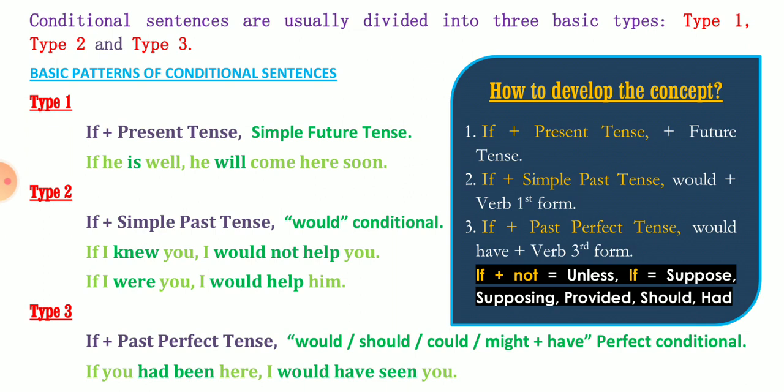Type 2: if plus simple past tense, then the second sentence uses 'would' plus verb first form. For example: 'If I knew him' — 'knew' is the second form, so it's simple past — 'I would not help you.' Another example: 'If I were you' — 'were' is also second form of 'is/am' — 'I would help him.'